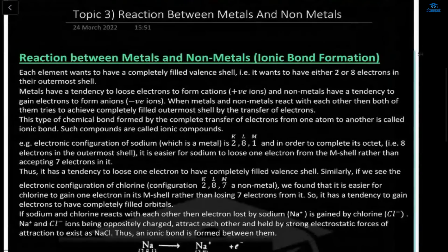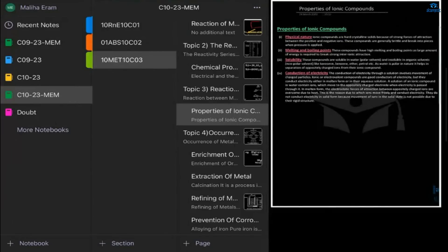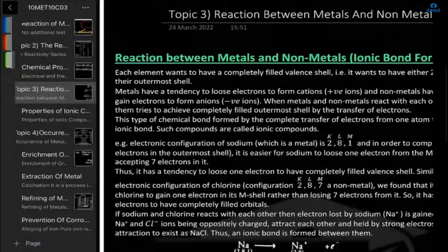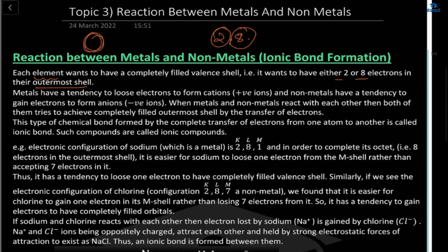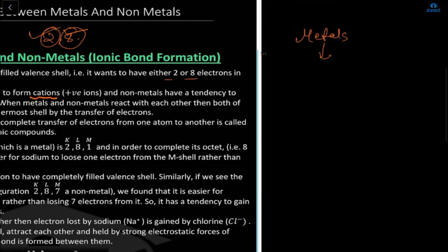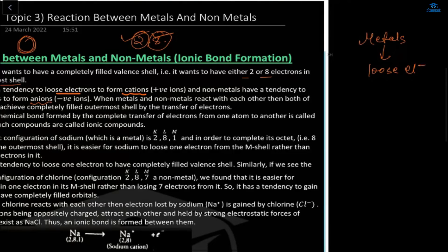Reaction between metals and non-metals: each element wants a completely filled valence shell — either two or eight electrons in the outermost shell. Metals have a tendency to lose electrons to form cations (positively charged), while non-metals have a tendency to gain electrons and form anions (negatively charged).